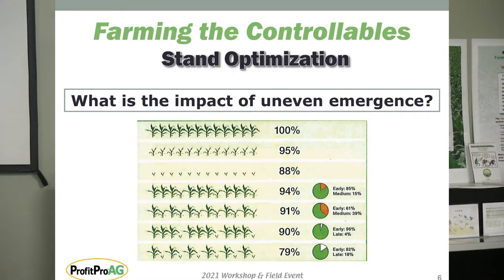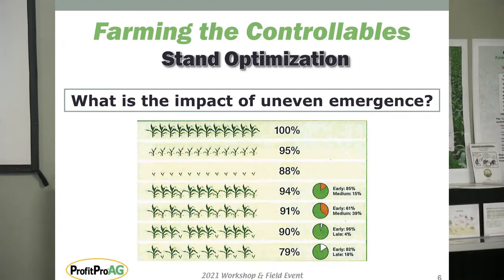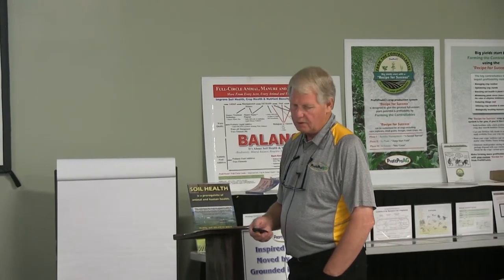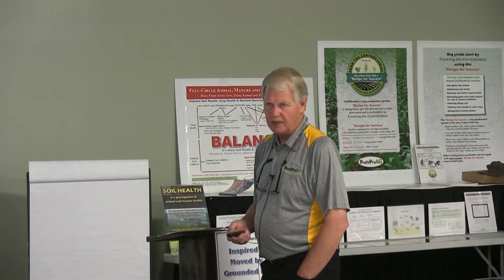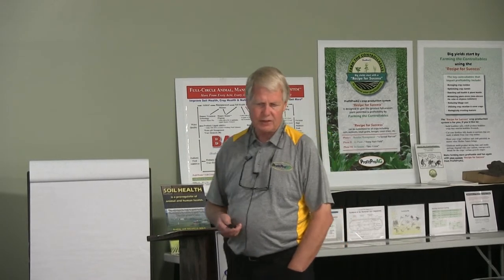Dennis can talk at length about stand optimization. The fact is, if your crop doesn't come up uniform and there are gaps, doubles, or unevenness for whatever reason, that is going to cost you yield — versus the ideal situation. Later emergence and unevenness in the stand — you can see the impact it has on your overall potential yield. This is an area that most growers really need to pay a lot of attention to.